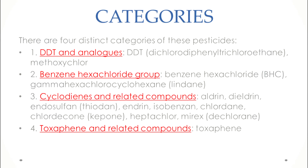There are different categories of organochlorines. The first is DDT and analogues. DDT is the most commonly known organochlorine pesticide. DDT's scientific name is dichloro diphenyl trichloroethane. Another pesticide in this category is methoxychlor. The division of organochlorine pesticides is based on their structure.